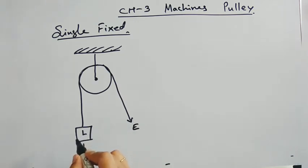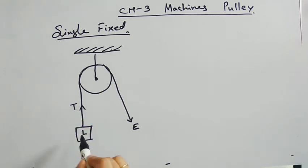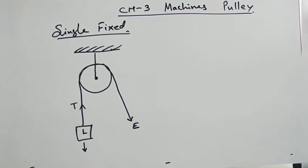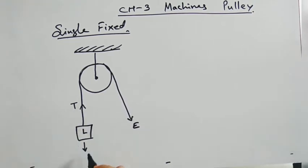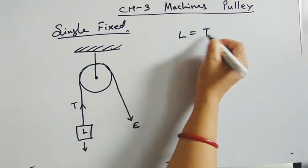Now this load is acting in downward direction but it is not falling. Why? Because of the tension in the string. There is a force acting in the string which is called tension, which balances the downward force of the load or gravitational force. So load is balanced by one T. Effort is balanced by one T.